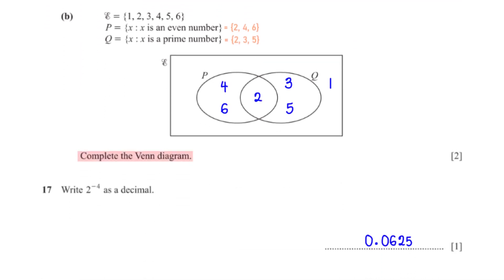Complete the Venn diagram. We've been given the elements of the universal set to be 1, 2, 3, 4, 5, and 6. So first, we need to list the elements of sets P and Q. We see that the number common to P and Q is 2, so we put 2 in this region.